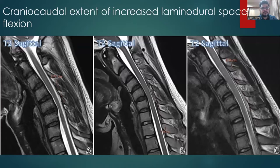The next set of images shows the craniocaudal extent of the increased laminodural space on flexion. The first image shows mild craniocaudal extent, the second shows moderate craniocaudal extent, and the last image shows severe craniocaudal extent of the increased laminodural space.